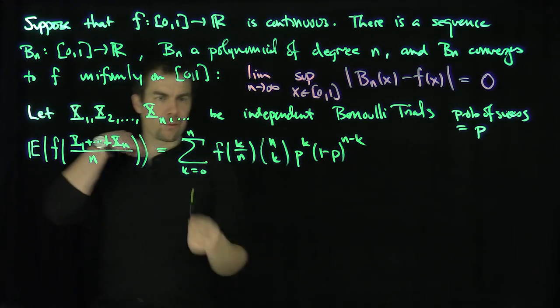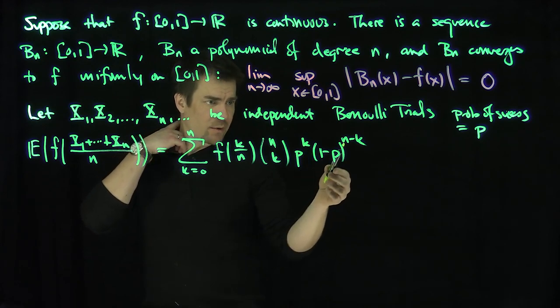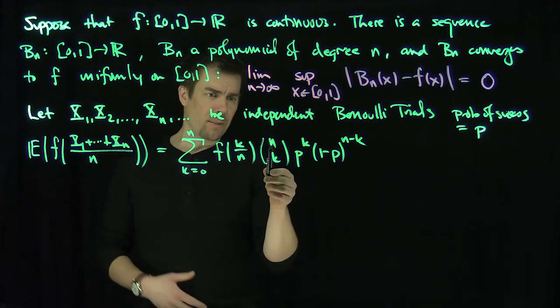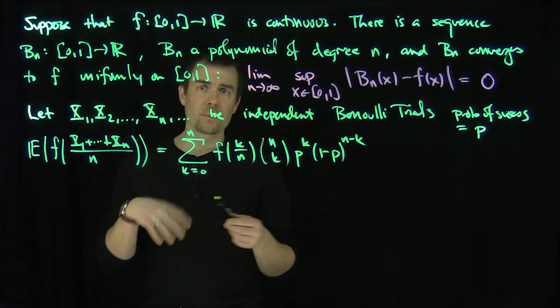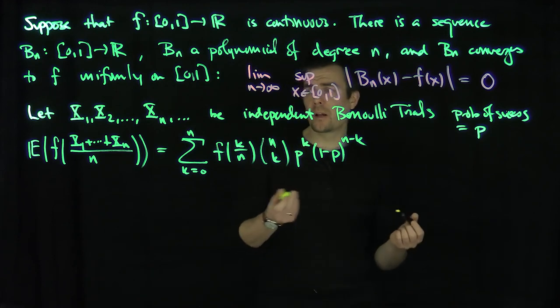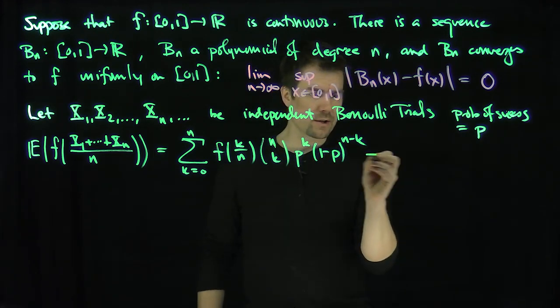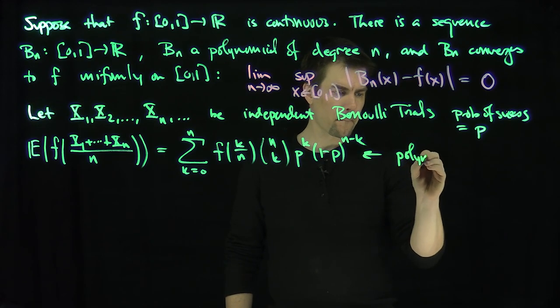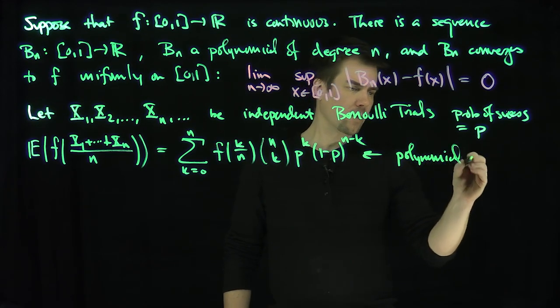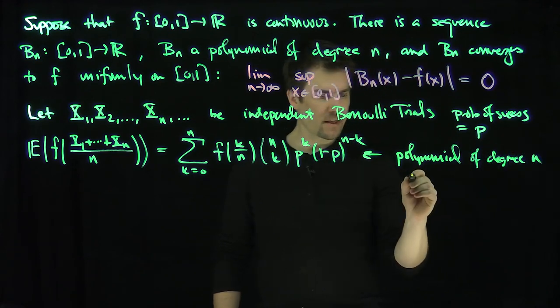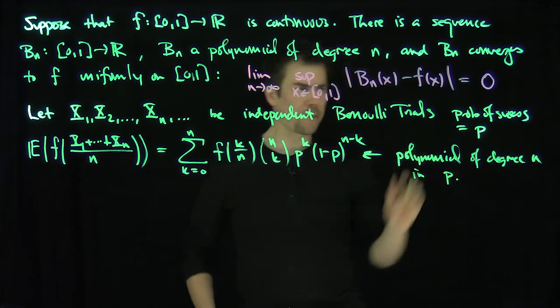Probability of success being p, and probability of failure being 1 minus p. So I would need k ones and n minus k zeros. How many ways are there to do that? From n of these random variables, choose exactly k of them to be equal to 1. This is a polynomial in p, so this is a polynomial of degree n in the p variable.